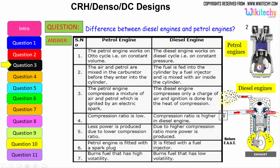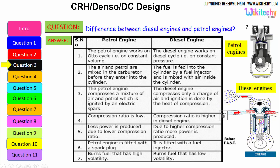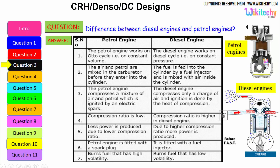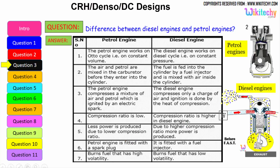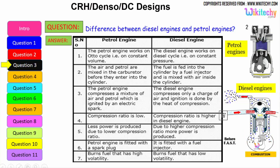The petrol engine compresses a mixture of air and petrol which is ignited by an electrical spark, whereas the diesel engine compresses only a charge of air and ignition is done by the heat of compression. The compression ratio is low in petrol engines, producing less power, whereas the higher compression ratio in diesel engines produces more power. The petrol engine is fitted with a spark plug; the diesel engine is fitted with a fuel injector.